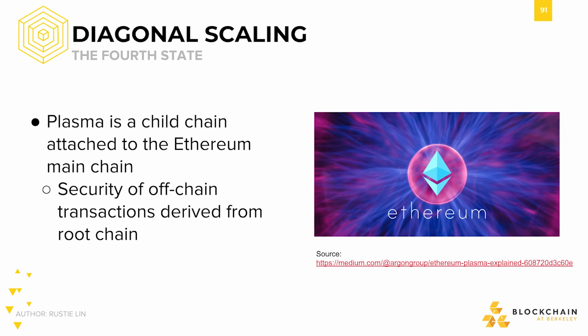Plasma extends on the idea of sidechains, which we explained in the previous section. Plasma is a child chain attached to the Ethereum main chain, also known as the root chain. In Plasma, security of off-chain transactions is derived from the root chain.